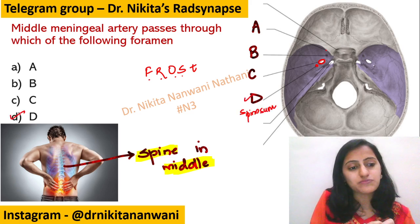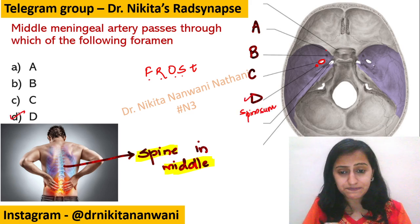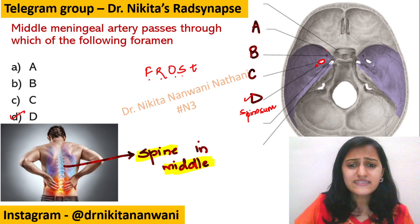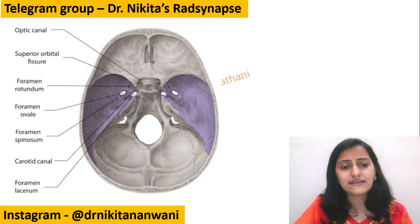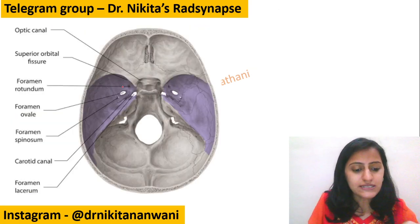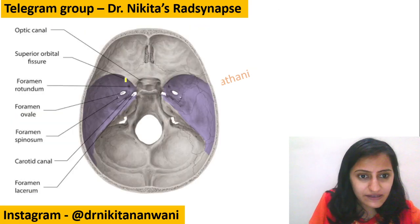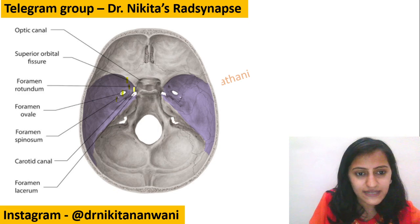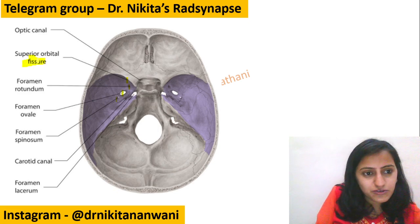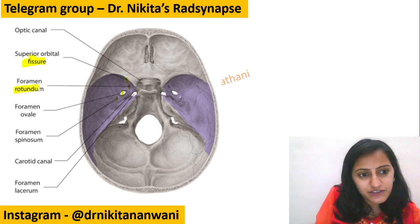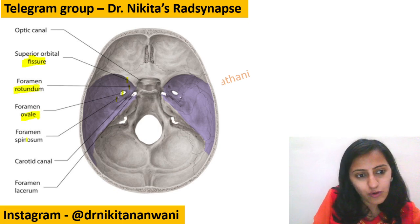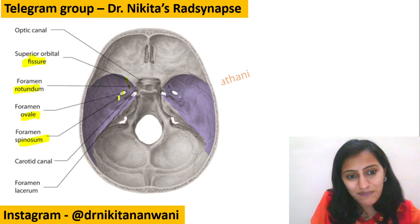Let us have a quick look at the labeled image. As we said, anterior to posterior it is F, R, O, S — that is your superior orbital fissure, rotundum, ovale, and spinosum.